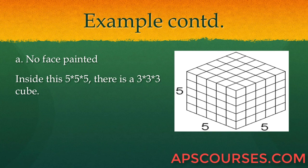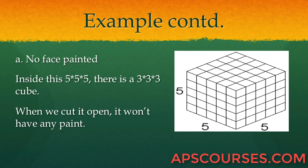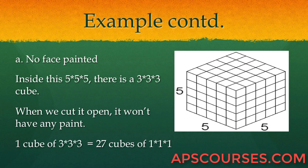Inside the 5×5×5 cube, there is a 3×3×3 cube that is isolated from the paint — the paint cannot reach inside the cube. When we cut the entire cube open, that inner 3×3×3 cube will have no paint. A 3×3×3 cube equals 27 cubes of 1×1×1, so these 27 cubes will not have any face painted.